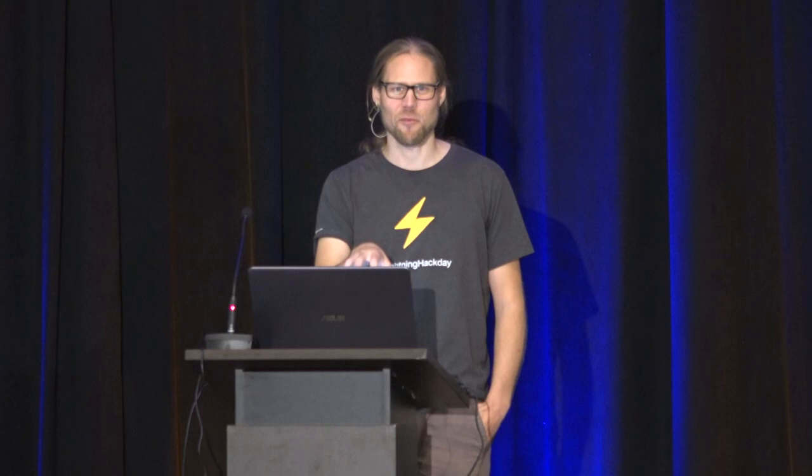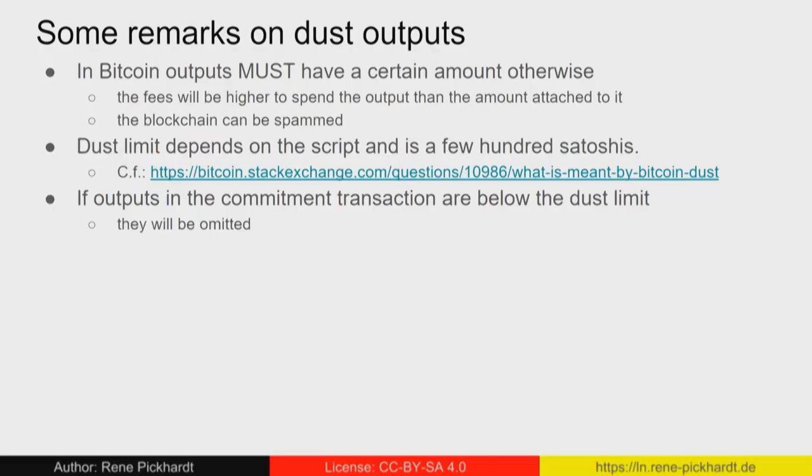I should mention I'm a Lightning Network developer—I hardly know Bitcoin. I'm happy that I'm able to do this Bitcoin pay-to-public-key-hash transaction. Some remarks on dust outputs: Bitcoin outputs must have a certain minimum amount; otherwise the fees will be higher than the output amount itself, which can be used to spam the blockchain. These tiny outputs are called dust outputs—usually a few hundred Satoshis. If the output in the commitment transaction is below the dust limit, it will be omitted. If you open a new payment channel and send someone one Satoshi, and then close the payment channel, that person doesn't get anything.